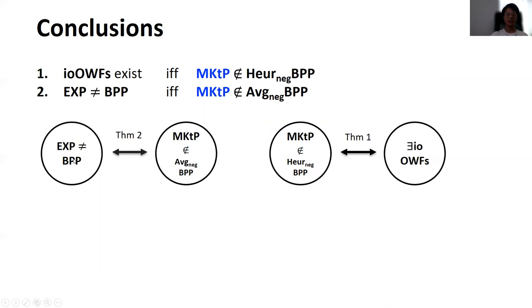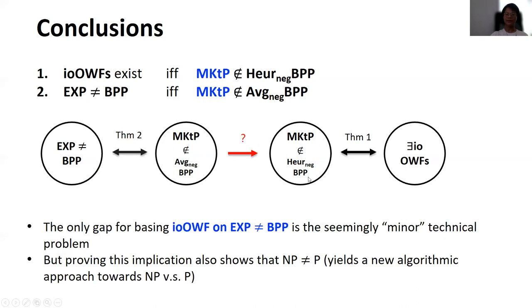In conclusion, today we have seen that the existence of infinitely-often one-way functions is equivalent to MKTP being hard on average with respect to two-sided error heuristics, and EXP not equal to BPP is equivalent to MKTP being hard on average with respect to errorless heuristics. The only gap for basing io-OWFs on EXP not equal to BPP is a seemingly minor technical distinction between two standard notions of average case hardness for the MKTP problem, which has been studied since the 1970s. However, proving these implications would show that NP is not equal to P, and this gives us a new algorithmic approach towards proving NP not equal to P: we just need to solve MKTP errorlessly on average, having access to a two-sided error heuristic. Thank you for your attention.